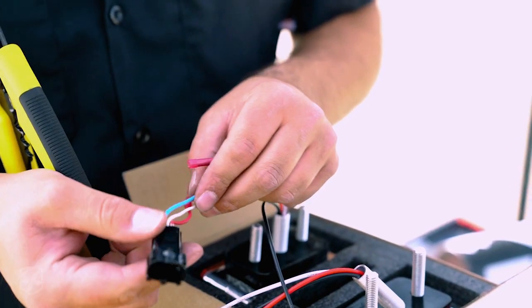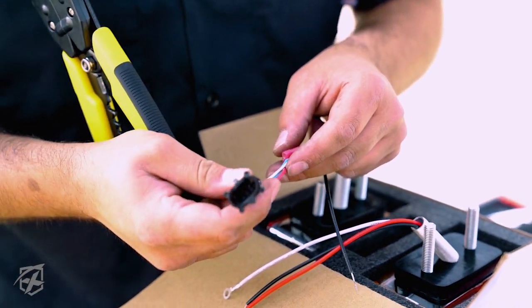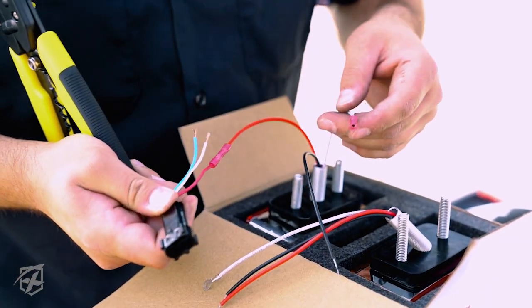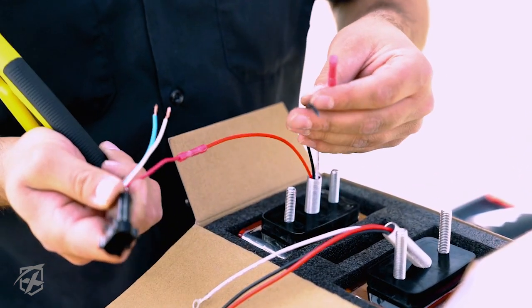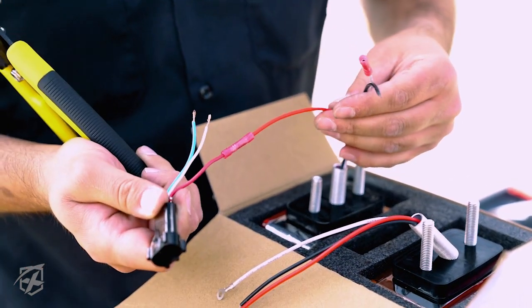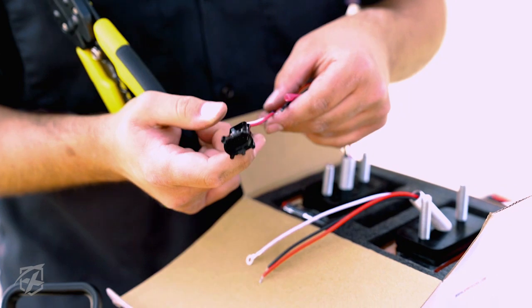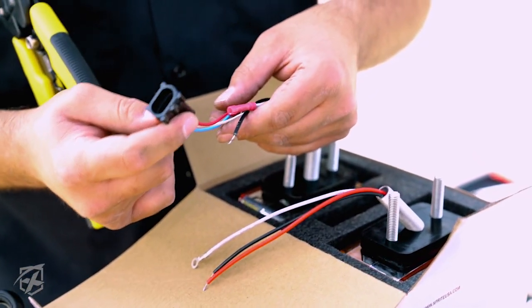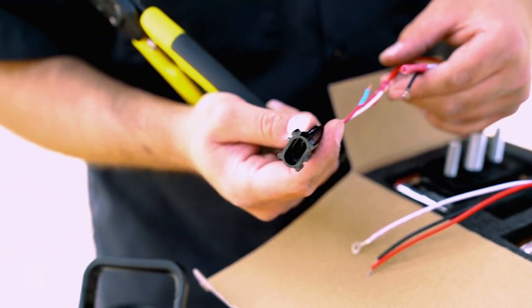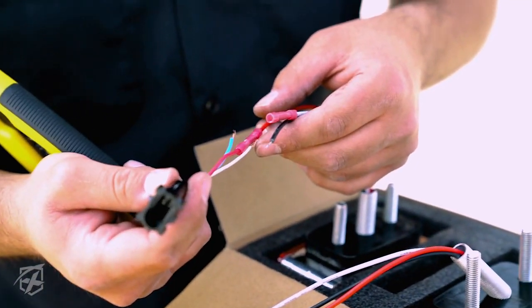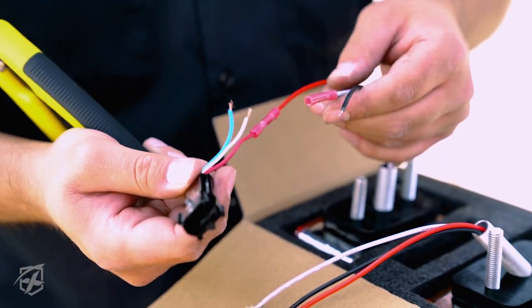Alright guys, so what we did is we removed the connector for the stock pillar lights and we're just connecting them up to our Xpright pillar lights. The reason why I did this is just so we don't have to cut into the wire harness coming directly from the vehicle itself. We just use the ones on the previous lights.